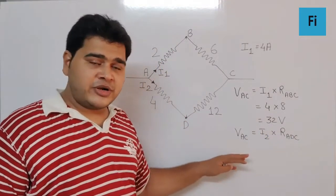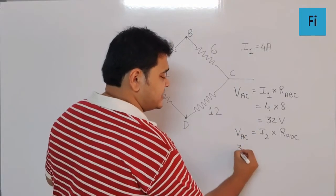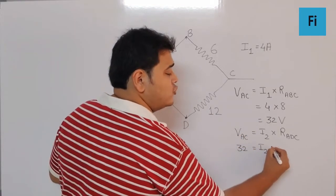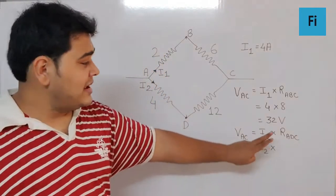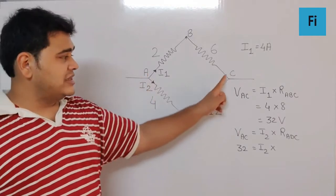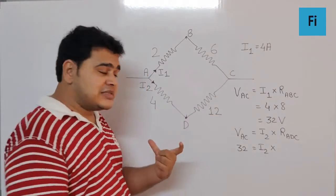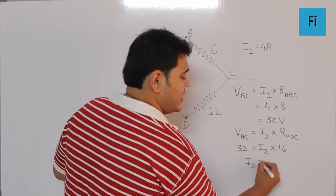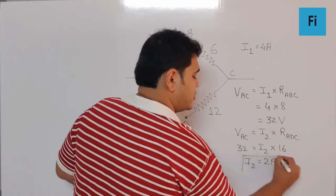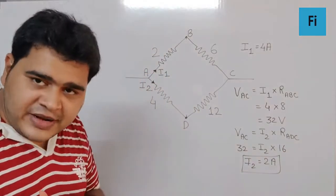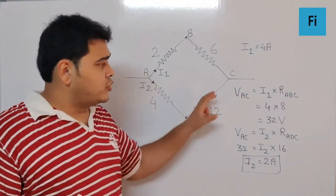I2 using this method. I can say now V_AC is 32, I2 is unknown, and R_ADC, that is the total resistance over here, is going to be 4 plus 12 which is 16 ohm. That gives us I2 as 2 amperes. Now definitely the current I2 is going...